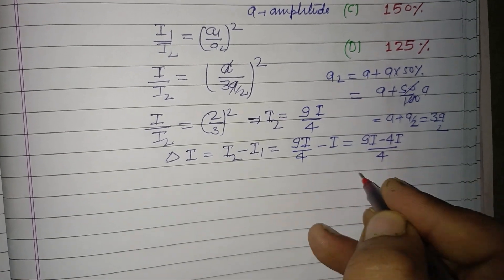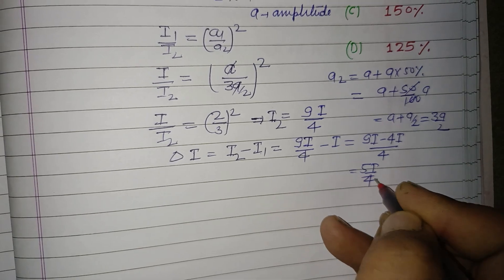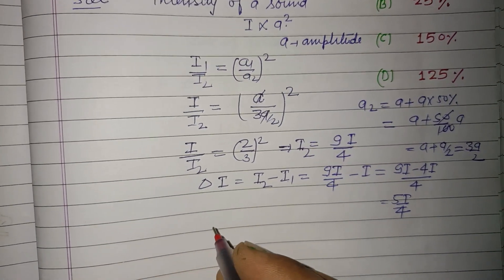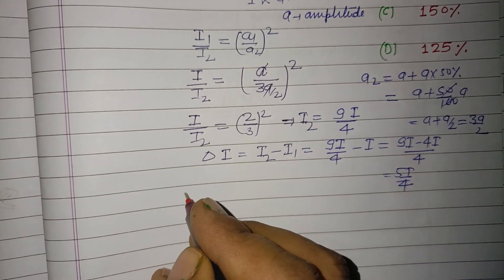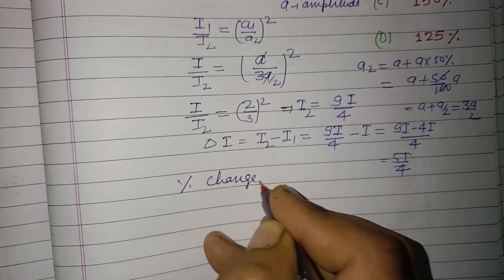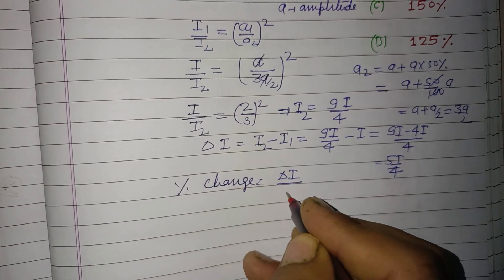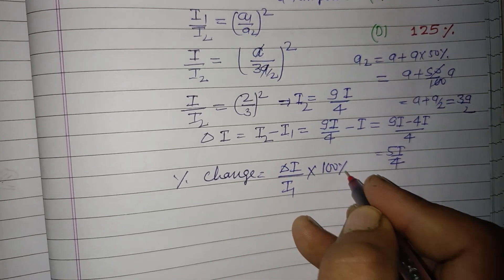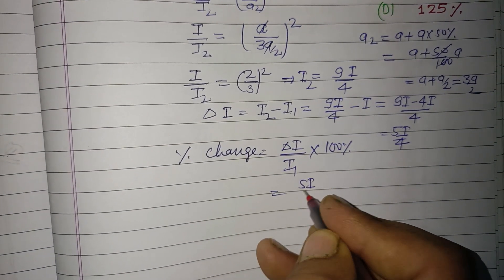So change in intensity or loudness is 5I upon 4. The percentage change equals change upon initial, that is delta I upon I1 times 100%, so 5I upon 4 divided by I times 100%.